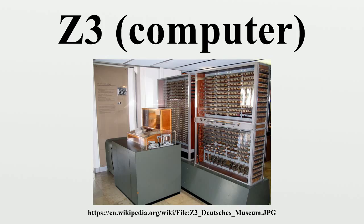Zuse's co-worker Helmut Schreyer built an electronic digital experimental model of a computer using 100 vacuum tubes in 1942, but it was lost at the end of the war. Tommy Flowers built Colossus, and the Atanasoff-Berry computer used thermionic valves and binary representation of numbers. Programming was by means of re-plugging patch panels and setting switches. The ENIAC computer, completed after the war, used vacuum tubes to implement switches and used decimal representation for numbers.